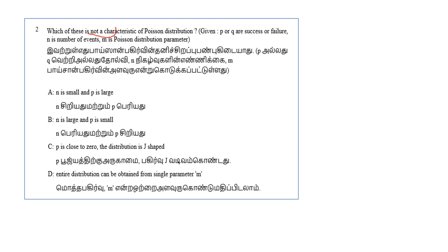For Poisson distribution: P, R, Q are success or failure; N is the number of events; M is the Poisson distribution parameter. The characteristics of Poisson distribution are: the number of trials N is too large, tending to infinity; and the probability of success P is too small, tending to zero. But option A states N is small and P is large — this is the Binomial distribution characteristic, not Poisson.